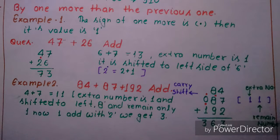Now let us discuss another trick: 'one more than the previous one.' We have to add 1 to the previous number. Let us see an example: 47 plus 27 plus 26.